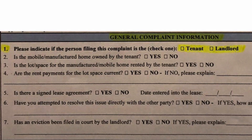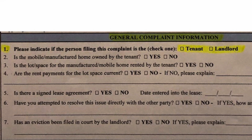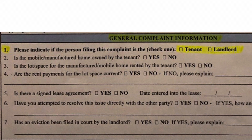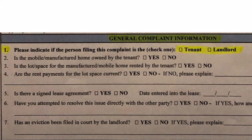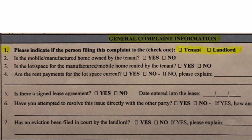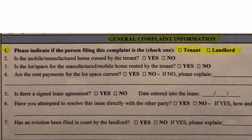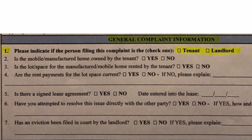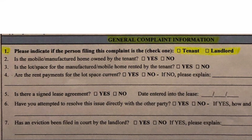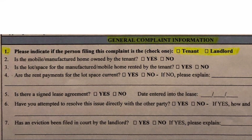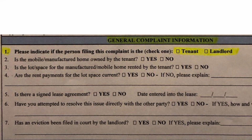We will start on page one. Let's start in the box titled General Complaint Information. Number one: please indicate if the person filing this complaint is — check one — tenant or landlord. I presume people who are filing these complaints are tenants, but please mark the one that applies to you.